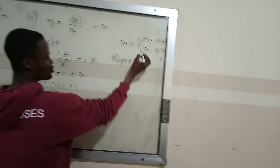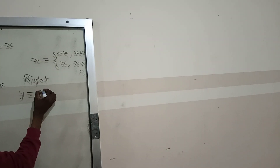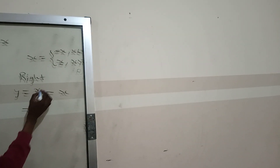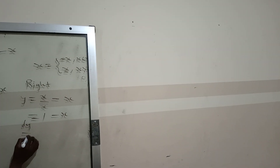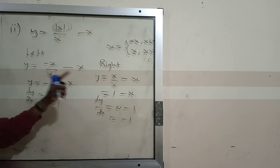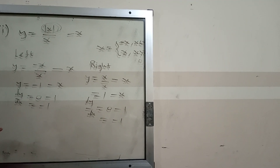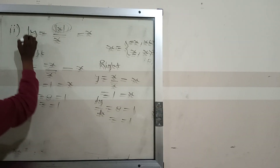For the right hand side, we substitute positive x in place of |x|, so we get y equals x over x, minus x. The x cancels to give 1, so y equals 1 minus x. Finding dy/dx gives 0 minus 1, which equals negative 1. The left hand side differentiation equals the right hand differentiation, so the differentiation exists and the function is differentiable.